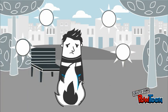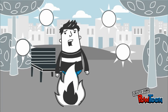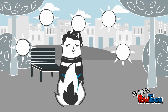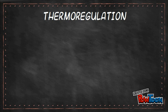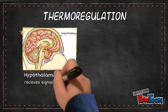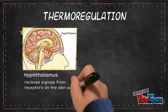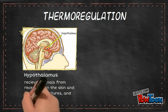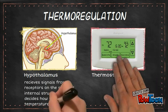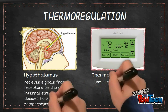Temperature homeostasis, also known as thermoregulation, is happening constantly within our bodies. Let's see how our body adjusts on those hot sunny days. A section of our brain known as the hypothalamus helps us detect fluctuations in temperature. It receives signals from receptors on the skin, as well as internal structures, and decides what should be done. This is just like a thermostat in your house, turning on and off the heating or air conditioning.